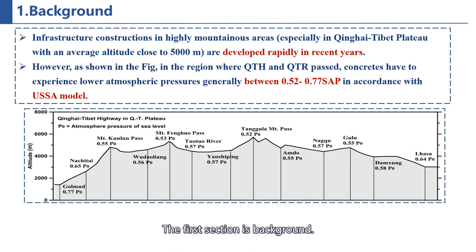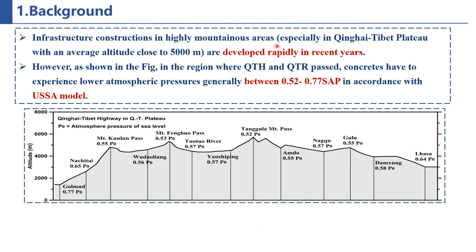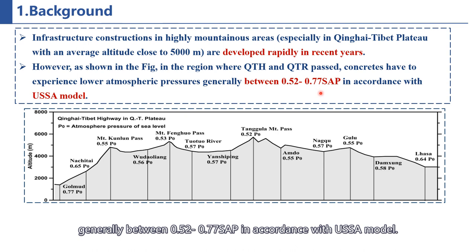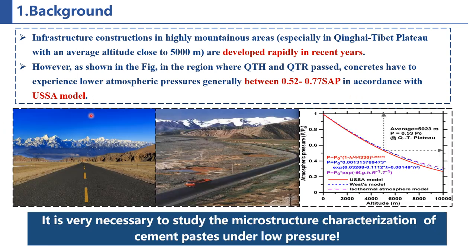The first section is background. Infrastructure constructions in highly mountainous areas are developed repeatedly in recent years. However, as shown in the figure, in the region where Qinghai-Tibet Highway and Qinghai-Tibet Railway passed, concretes have to experience lower atmospheric pressures, generally between 0.502 to 0.77 standard pressure, in accordance with the USSA model. Therefore, it is very necessary to study the microstructure characterization of cement pastes under low pressure.